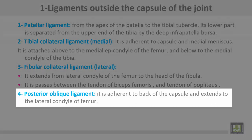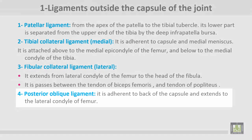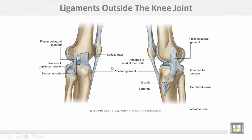The posterior oblique ligament is adherent to the back of the capsule and extends to the lateral condyle of the femur. These are the ligaments outside the joint: this is the patellar ligament, and this is the tibial collateral and fibular collateral ligament. From the posterior, there is a posterior oblique ligament.